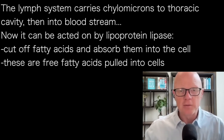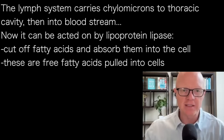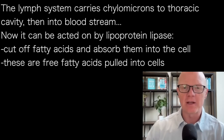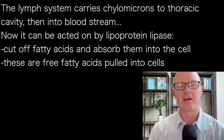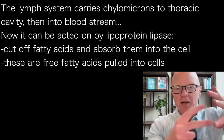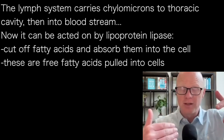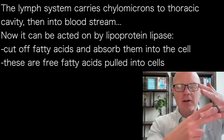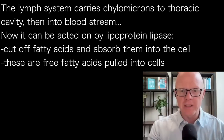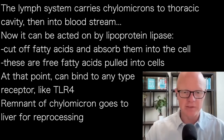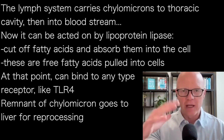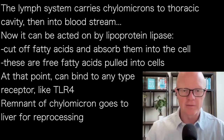Now the journey is not over yet. We're talking about the digestion of fats because the idea is that if you eat saturated fats, you'll get insulin resistance. So the chylomicron is now in the blood and can be acted on. We have lipoprotein lipase — a different version of the lipase that was in the gut cutting off fatty acids — now through the blood vessels, through the capillaries, cutting off fatty acids and absorbing them into the cell. The free fatty acids get pulled in, and at that point it's possible they can bind receptors like TLR4. Then we have the chylomicron remnant, having dropped off a lot of fat throughout the body, which can go to the liver and get reprocessed.